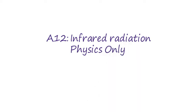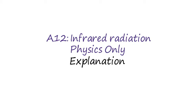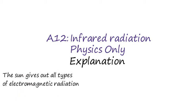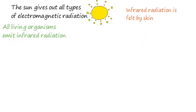The Sun gives out all types of electromagnetic radiation. It is infrared radiation that you feel on your skin although it is not visible to the human eye. All other organisms also emit infrared radiation and we can see this using special cameras which detect heat.